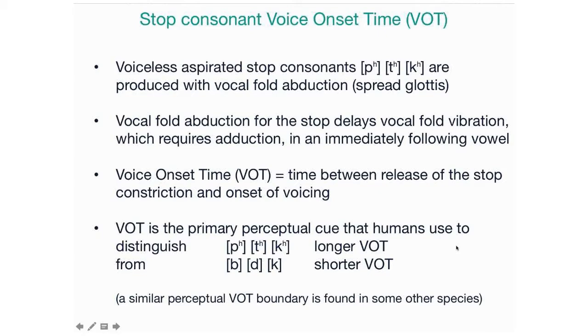These consonants — the voiceless aspirated stop consonants — are produced by spreading the vocal folds, and that spreading delays vocal fold vibration in a following vowel. We'll be looking at that delay, which is an instance of what's called voice onset time. It's the time between the release of the stop constriction and when the voicing begins. It is the primary perceptual cue that people use to distinguish pa, ta, and ka from ba, da, and ga. The voiceless stops pa, ta, and ka have longer VOT values.